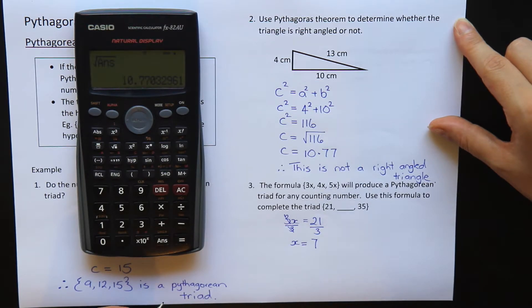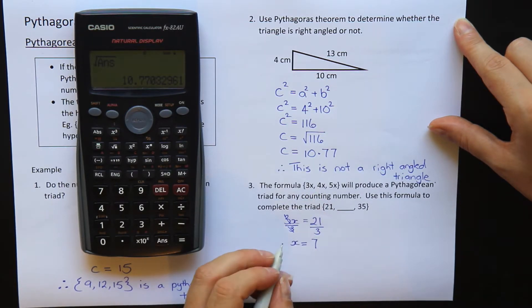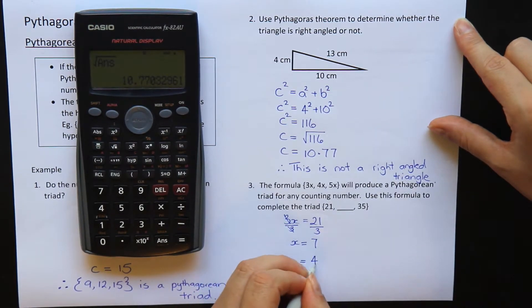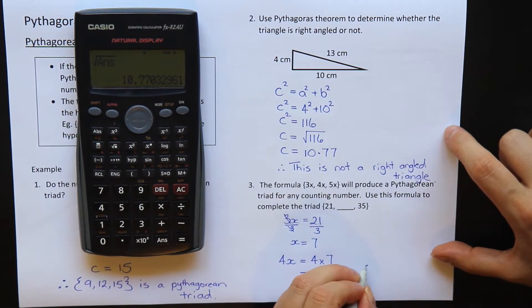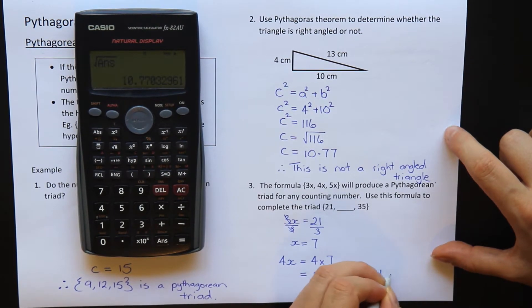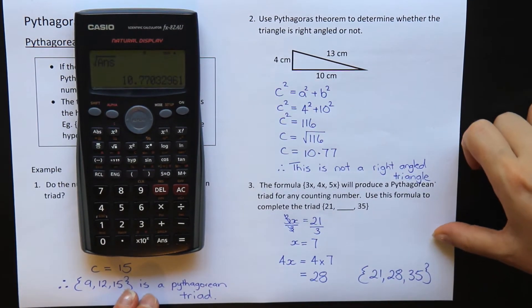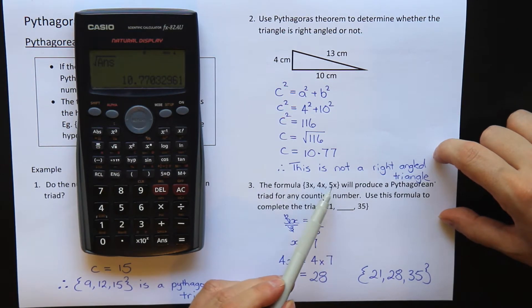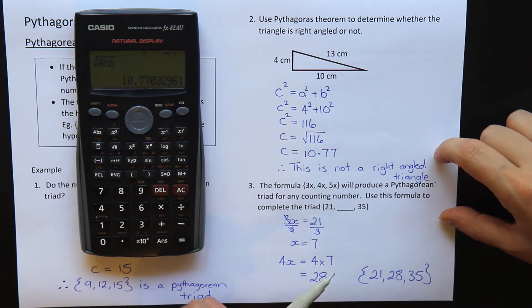That means that I can use that to find my missing number here. So I could do 4x. That's the position of my missing number. That will be 4 times 7 because x is 7, which equals 28. So that means that my triad is 21, 28 and 35. Now I didn't actually use the 35 at all. We could check though if I had 5x is equal to 35. If I divide this by 5, I will get 7 as well. So it didn't matter if I used the 3x equals 21 or the 5x, I would get the same answer.